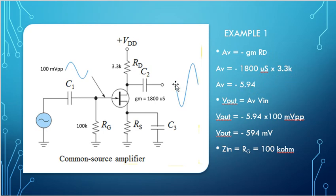The negative sign means that the output is out of phase with the input. Vout is our standard gain formula of gain times Vin. Our gain was minus 5.94, our Vin is 100 millivolts peak to peak. Vout will be minus 594 millivolts peak to peak. Zin equals whatever resistor we put for RG, 100K. So Zin is 100K.